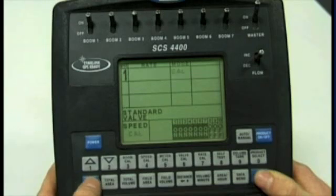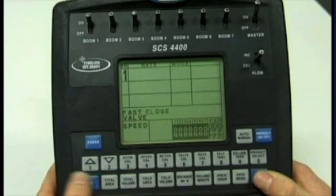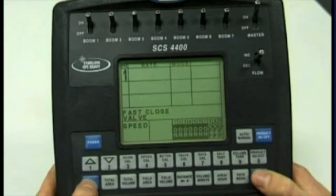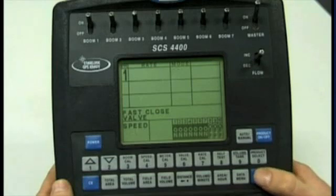If you're unsure of the valve type, you need to go to the electric controller on the sprayer. On the sticker on the valve, it will tell you what setting it should be on. If it says fast close valve, select fast close valve and press enter once you're happy with the setting.